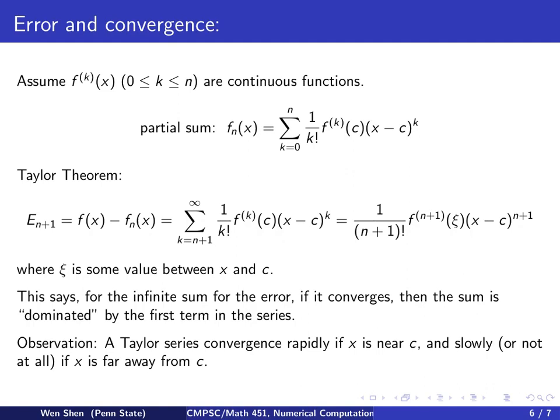We can also make this observation: if x is close to c, then the Taylor series would converge more rapidly because you have a small number raised to a power. If x is further away from c, it will take longer to converge or might not converge at all.